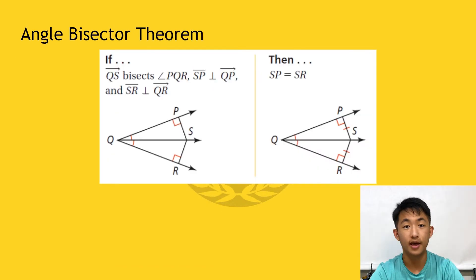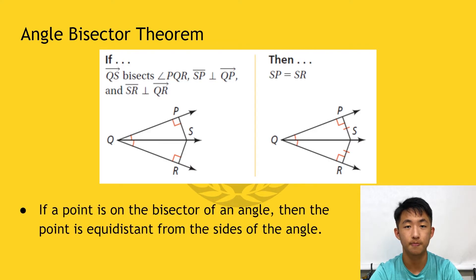Moving on, the angle bisector theorem states that if a point is on the bisector of an angle, it must also be equidistant from the sides of that angle. Since in the diagram, point S is on the bisector of angle Q, SP must be equal to SR.